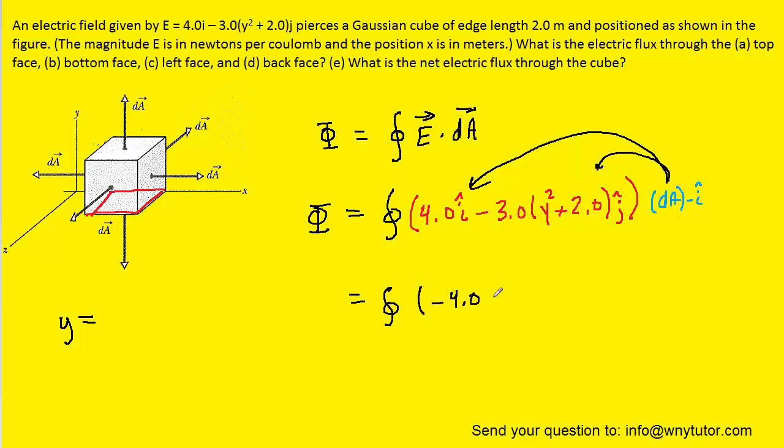We'll have a negative 4.0. It's negative because we're multiplying a negative by a positive. Conveniently, the i-hat multiplied by j-hat cancels away. So this is just minus zero, which we don't even have to write. We can pull out the negative 4.0 and integrate. We have negative 4 multiplied by the area. The area is 2 squared. We're left with negative 16 newton meters squared per coulomb. This is the correct answer to part C.